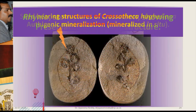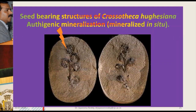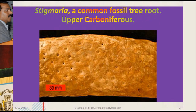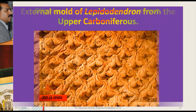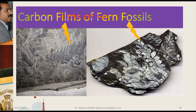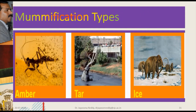Reproductive structures, mineralized. Lycopodium axis from the Middle Devonian period. Stigmaria fossil from the Carboniferous period. These are micro-fossils obtained by maceration. These are carbon films — actually compression fossils — where the fossil is available only in the form of a thin film of carbon. Mummification types: fossils are preserved in amber, tar, and ice.